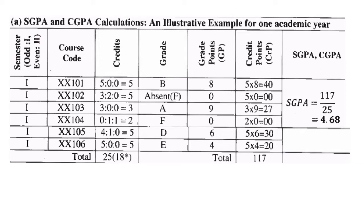Let's take an illustration. To demonstrate SGPA and CGPA we need at least two semesters, so I use Semester 1 (odd) and Semester 2 (even). There are six subjects with course codes 1 through 6. The credits are 5, 5, 3, 2, 5, 5 — giving a total of 25 credits for the odd semester.